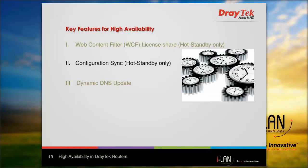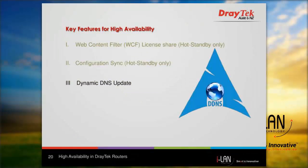Every configuration modification made on the primary router will be synchronized to the other group members, ensuring that when the secondary router becomes primary, your network will continue to work without interruption. The only way you will notice a failure has occurred is via notification. The routers in the high availability group also share the same dynamic DNS account, so when the primary router fails and the secondary comes online, the DDNS profile will also be updated, and the network remains accessible via the same DNS domain.